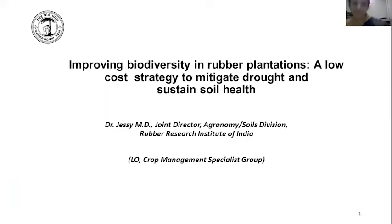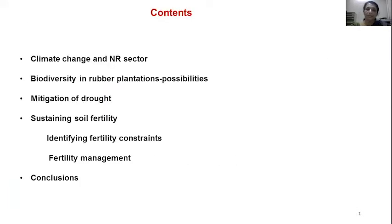Good afternoon. The topic of this presentation is improving biodiversity in rubber plantations: a local strategy to mitigate drought and sustain soil health. The contents will cover climate change impacts on the natural rubber sector, how biodiversity can be improved in rubber plantations, the effect of biodiversity on drought mitigation and soil fertility, and a conclusion.